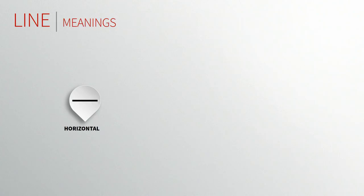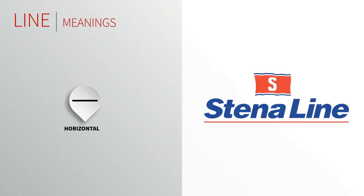Horizontal lines are parallel to the horizon. They look like they're lying down, at rest. Because of this, they suggest calmness and quietness — they can't fall over. They're used to accentuate width and are very stable and secure. Horizontal lines, by their connection to the horizon, are associated with outbound ideas. You can see the Steniline logo — the line underlying the name makes that connection to the sea, and Steniline is a shipping company.